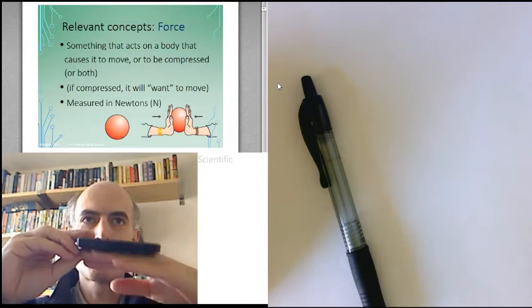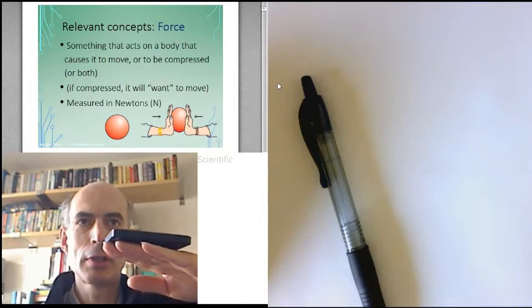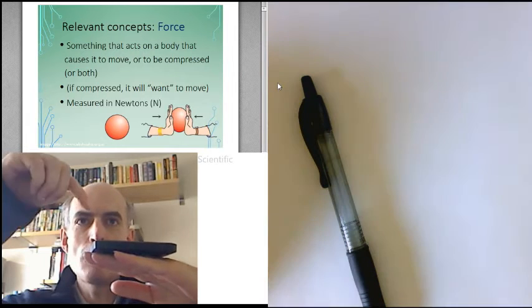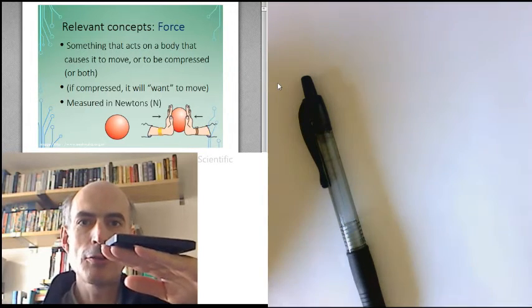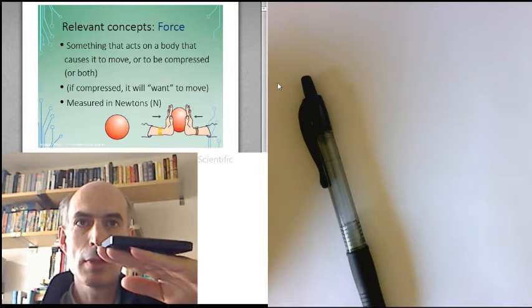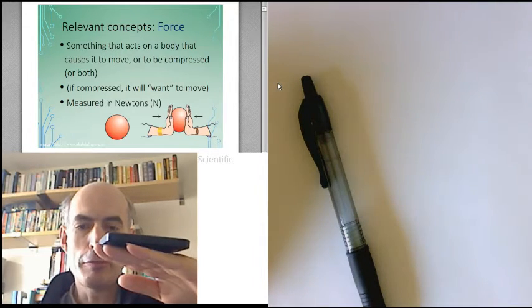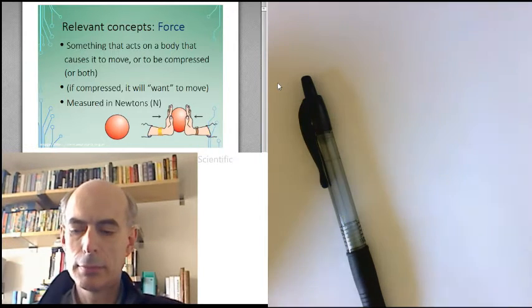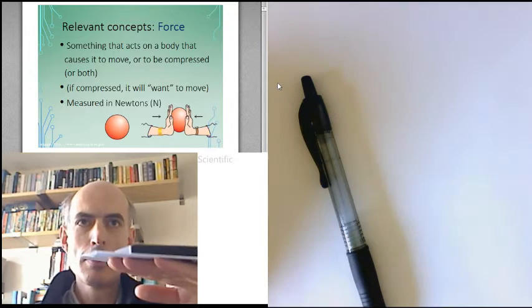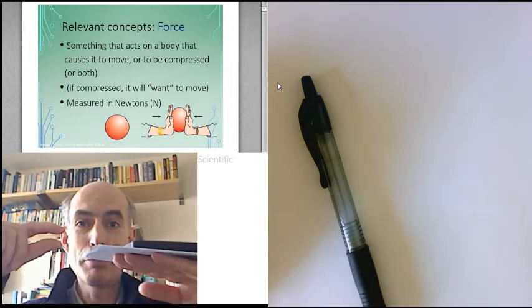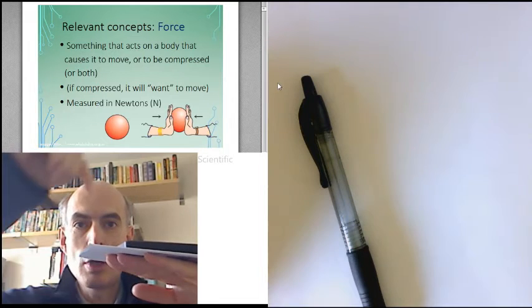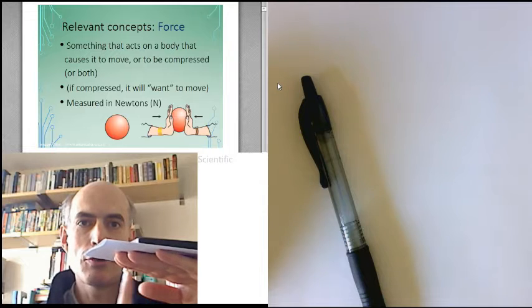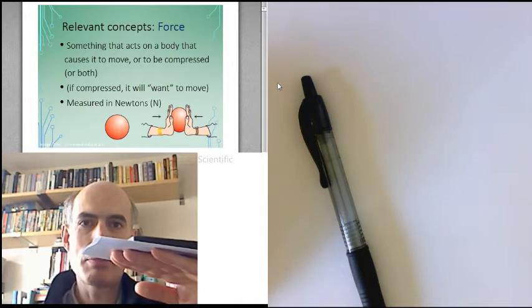While I hold it, there is also another force on this hard drive coming from my hand, pushing up. And if the weight and the force going up from my hand are equal and opposite, then the hard drive does not move. If there was something in between my hand and the hard drive, a piece of paper for example, then that piece of paper would be being compressed slightly, because the force of the hard drive's weight pushing down and the force provided by my hand pushing up are squeezing that paper slightly.